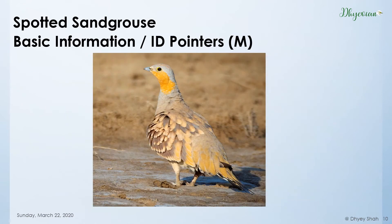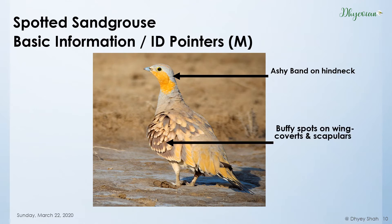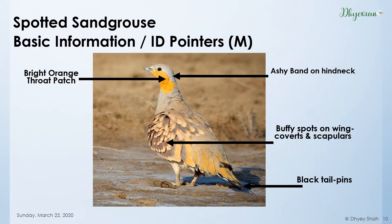Moving on to the male: the male will have an ashy band on its hind neck — or nape. It also has buffy spots on wing coverts and scapulars, which are parts of the wing clearly visible. It also has black tail pins and a bright orange throat patch.